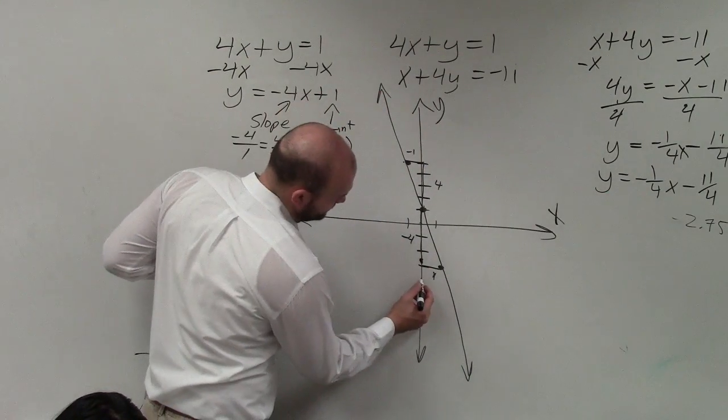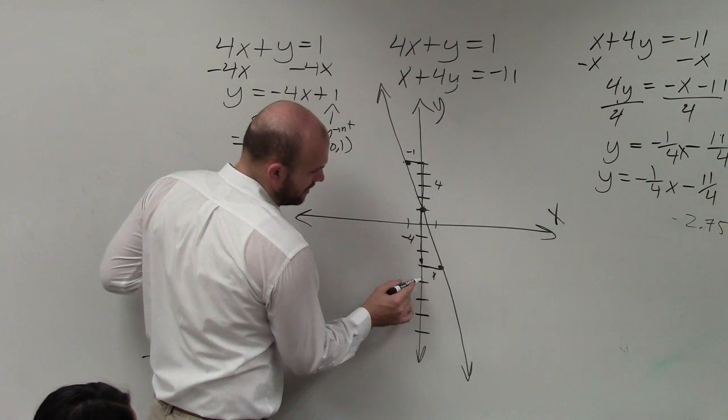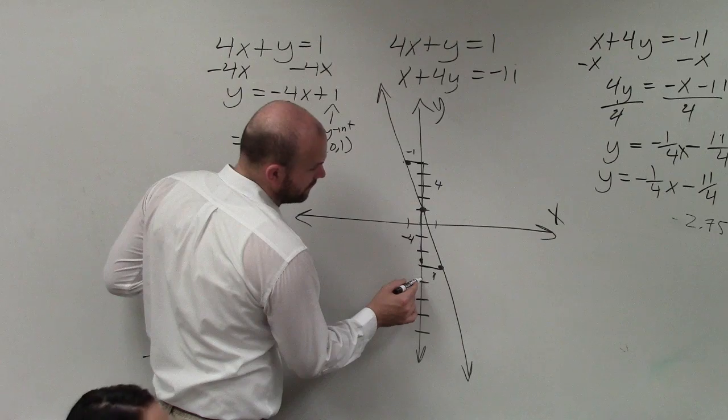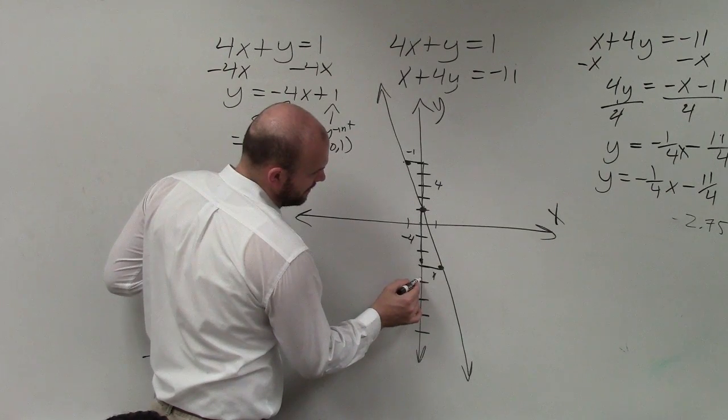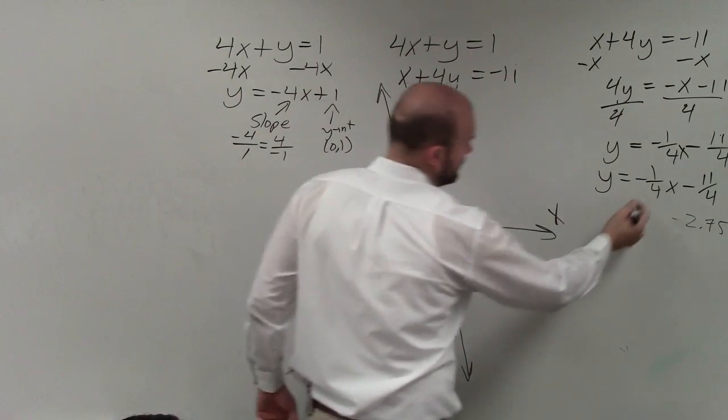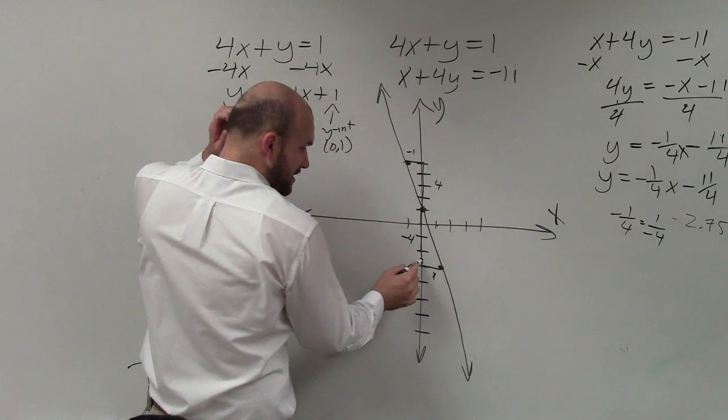I'm going to go down 1, down 1, and then down 1 over 4. So I go down 1, and then over 4. So 1, 2, 3, 4.